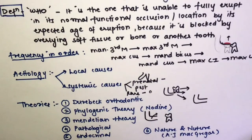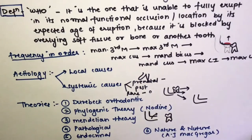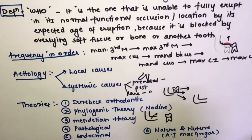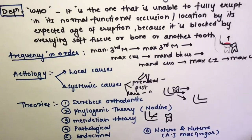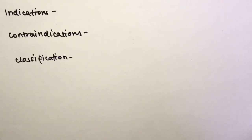The 'nature and nurture' theory was given by A.J. McGregor. It is similar to the phylogenic theory — due to primate evolution, jaw size is getting reduced. Additionally, changes in the diet of modern civilization and underuse of teeth contribute to this reduction.